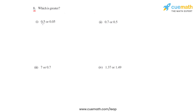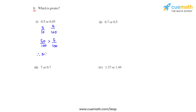Starting with the first bit, we have 0.5 which can be written as 5 over 10, and 0.05 which can be written as 5 over 100. We can make the denominator of 5 over 10 equal to 100 by multiplying the numerator and denominator by 10, giving us 50 over 100. Since 50 is greater than 5, we can say 50 over 100 is greater than 5 over 100, therefore 0.5 is greater than 0.05.